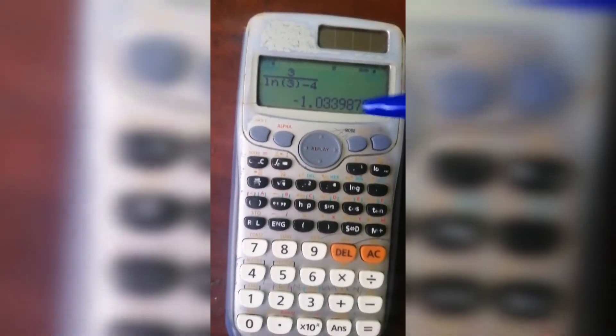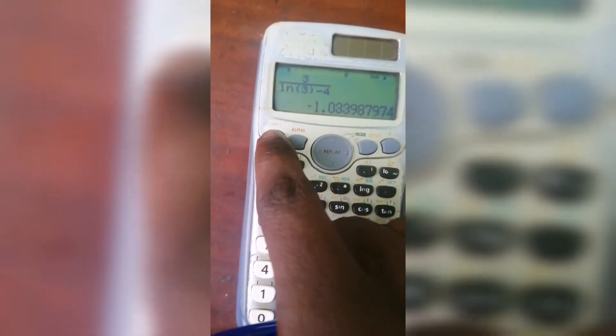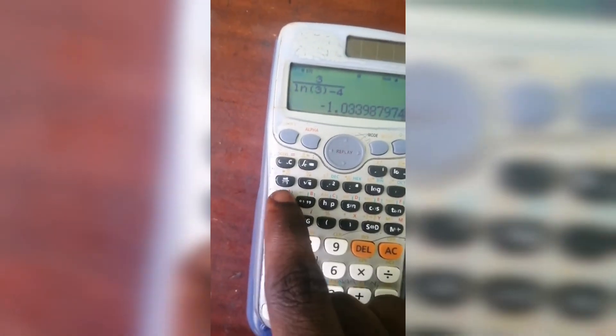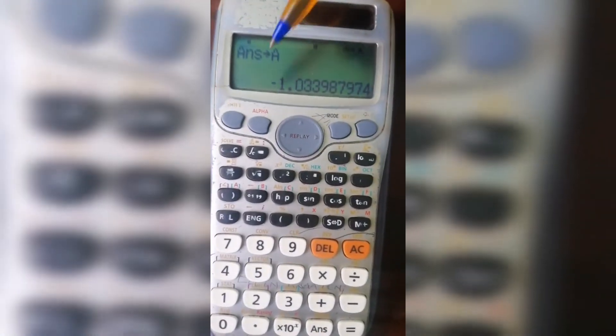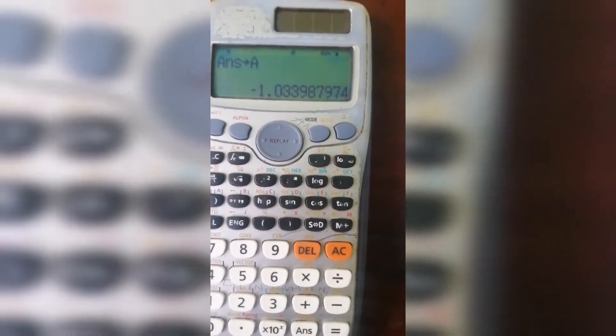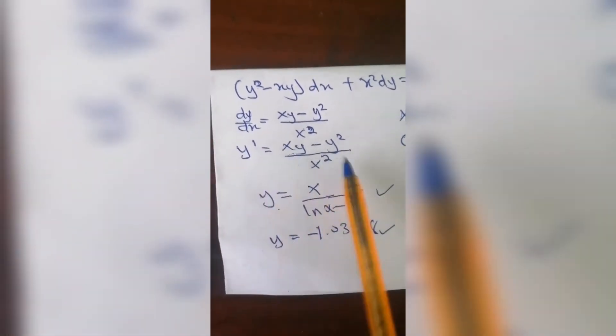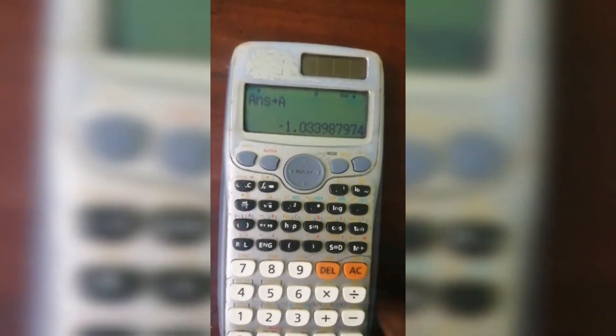What you do is you're going to save this as any alphabet on the calculator. Press shift plus TOLL. Now on the calculator, A is y. You go back now, you go back to the differential equation.